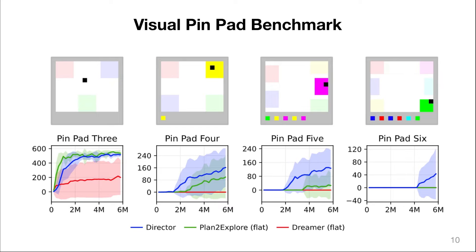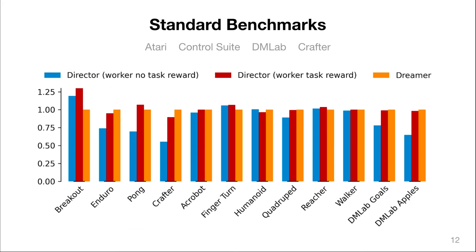We find that low-level exploration works surprisingly well in this environment and manages to solve the pin pad with three pads and even have some learning progress with four and five pads. The policy without exploration or hierarchy in red only makes some learning progress on three pads and fails on the larger environments. And in contrast, Director learned successfully on all four sizes.